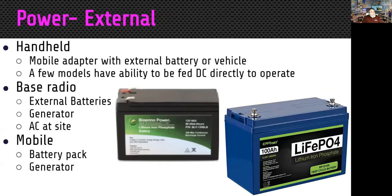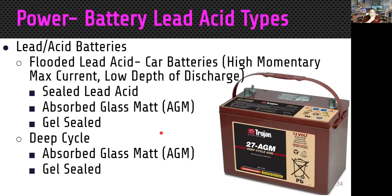If you're using a handheld, sometimes the batteries run out, so you may want an external adapter to use battery power from an external source or your vehicle. A few radio models have the ability to feed DC directly, but most only have DC charging capability, so you may need to buy an adapter. For base radios, you'll need external batteries, a generator, or AC at the site. Operating portable doesn't necessarily mean battery or generator power — you might be at a location that has power. For lead acid batteries, you want a deep cycle type such as absorbed glass mat or gel cell batteries, not flooded lead acid car batteries, which have a low depth of discharge.